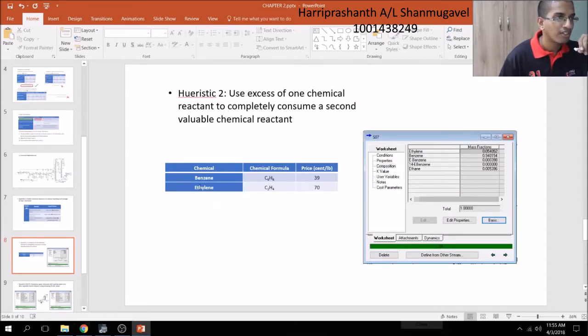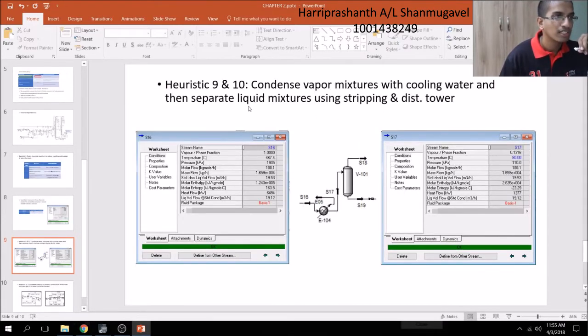From this configuration, we achieved purity of ethyl benzene of 87.55%. We integrated several heuristics when designing the base case. The first heuristic is limiting chemical reactions to reduce handling and storage of toxic chemicals. For reaction pathway 2, chloroethane is extremely flammable and produces hydrochloric acid. For reaction pathway 3, hydrogen is extremely unstable and toxic. Therefore, we chose reaction pathway 1 because it is safest. For heuristic 2, we use excess benzene to completely consume valuable ethylene.